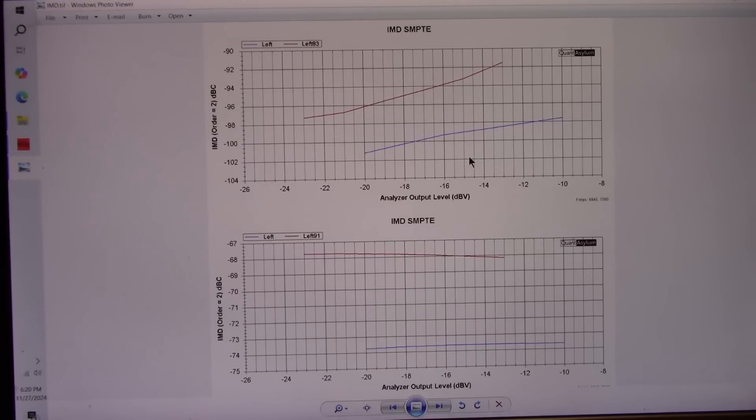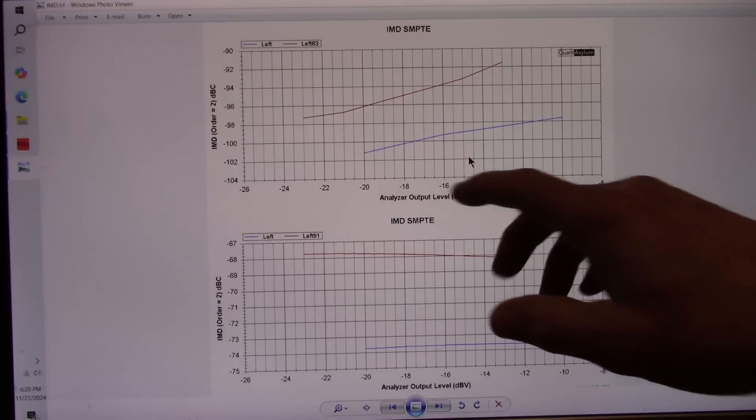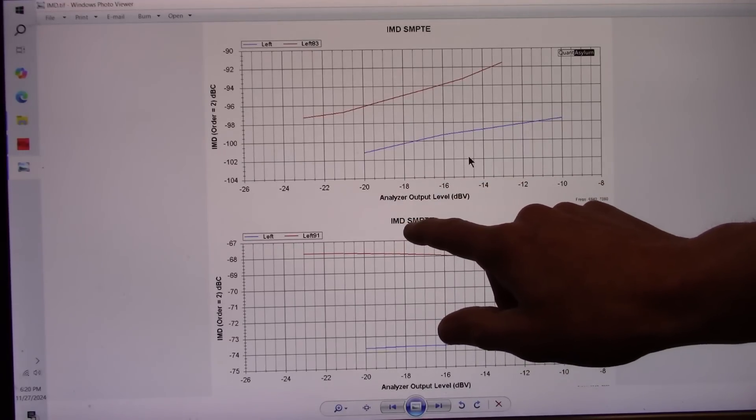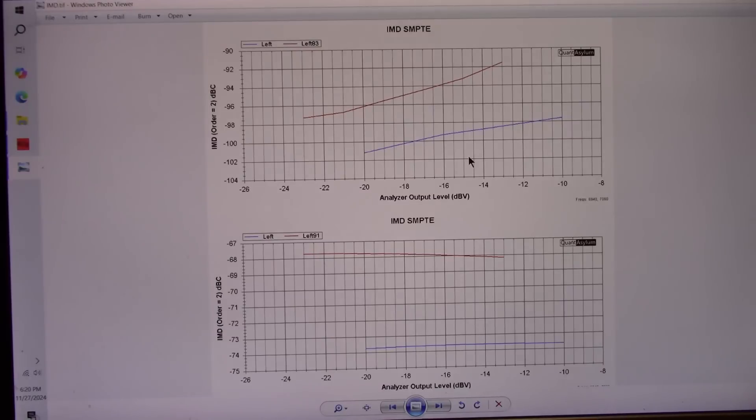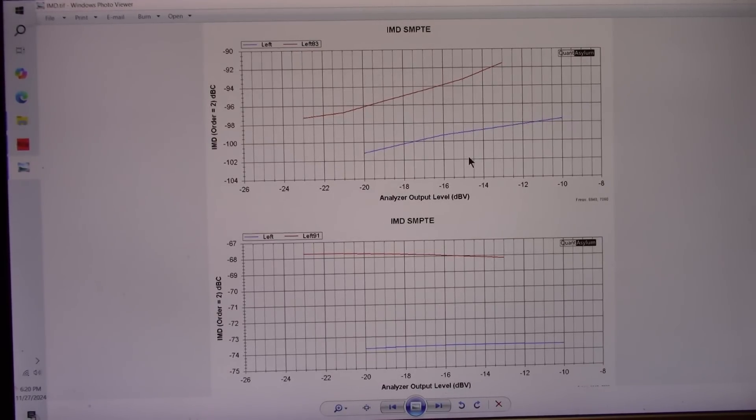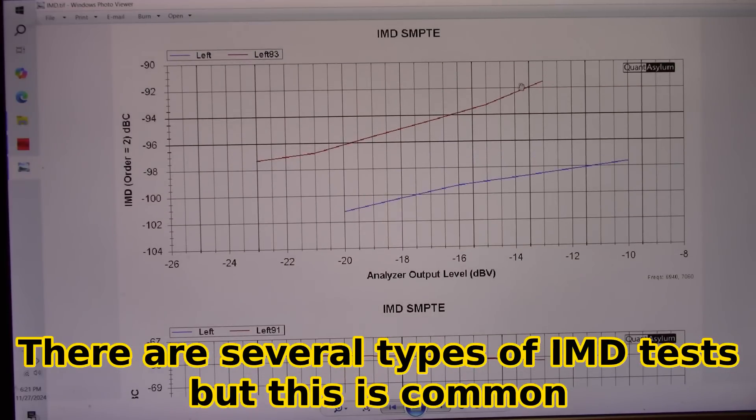Finally, the intermodulation distortion test. I ran the SMPTE type test. Don't quote me on it. I think that stands for Society of Motion Picture and Television Engineers or something like that. I don't know. I just, going by memory, correct me if I'm wrong. But it's a type of test that uses a 60 hertz and 7 kilohertz signal at different levels. They're not equal levels and the test measures the intermodulation distortion. Again, I set the levels to be the same for 4 and 8 ohm loads.